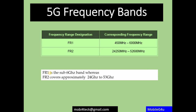In 5G SA mode, the 5G base station is directly connected to the 5G core network and the control signaling does not depend on the 4G network at all. In NSA we are dependent on 4G, whereas in SA, 5G is fully capable of supporting both the control plane and data plane independently.